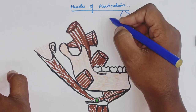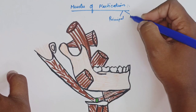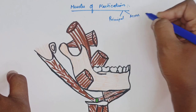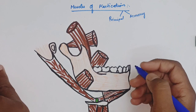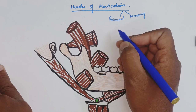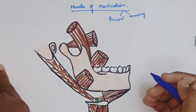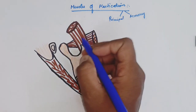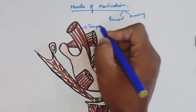In the muscles of mastication there are two groups: principal muscles and accessory muscles — four muscles each. The principal muscles are: temporalis, masseter, lateral pterygoid, and medial pterygoid. The accessory muscles are: digastric muscle, buccinator muscle, mylohyoid muscle, and geniohyoid muscle.